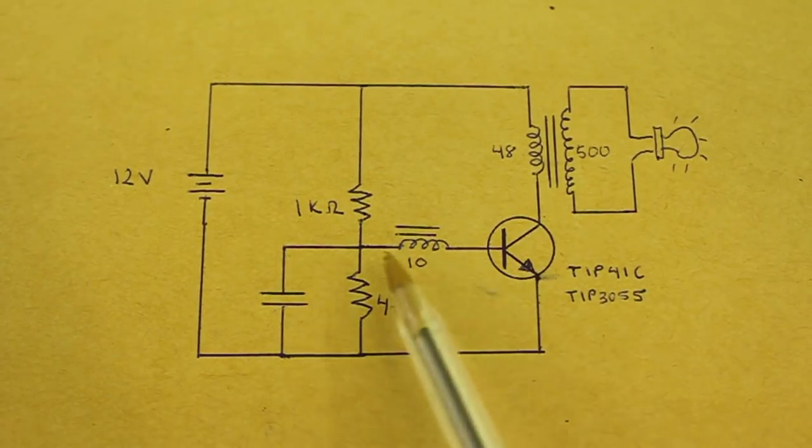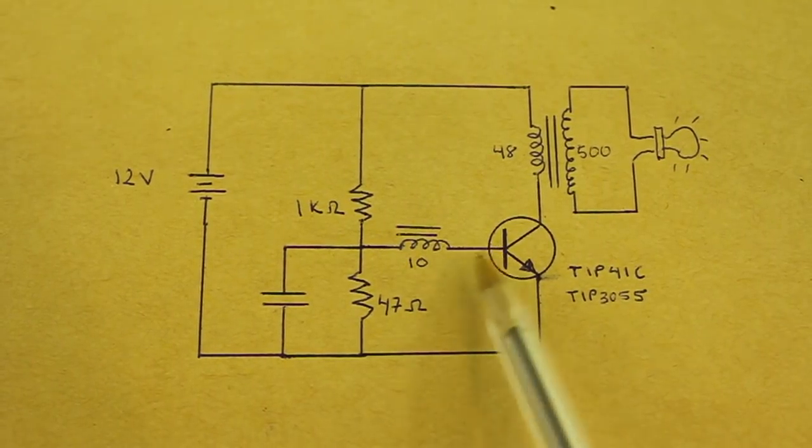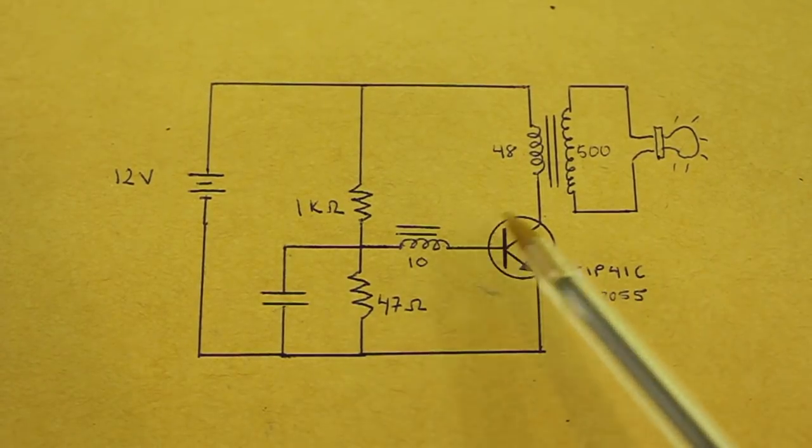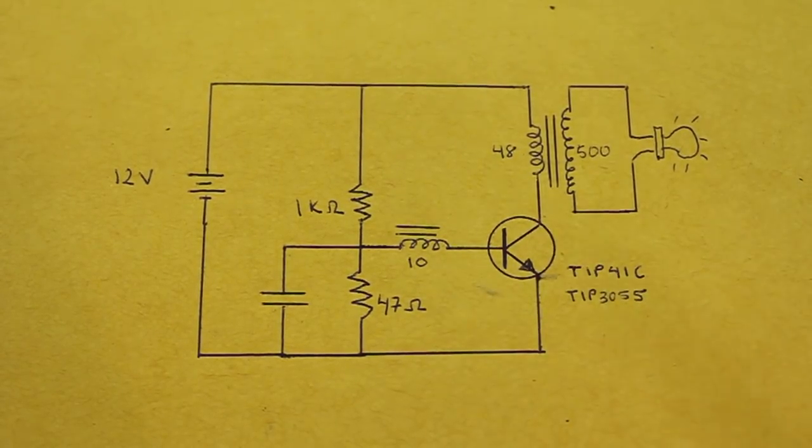So the voltage to the base is now of a less value and the transistor starts to turn off.